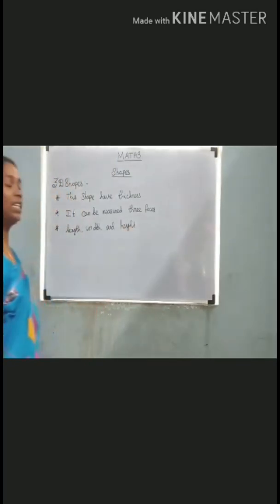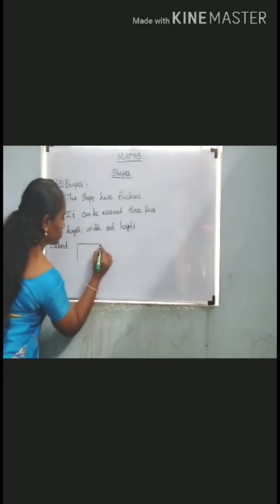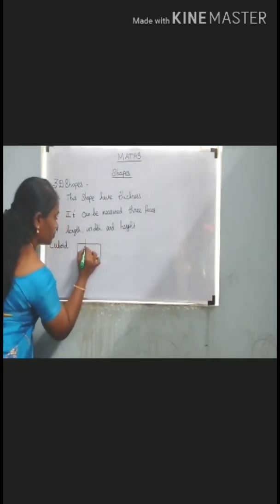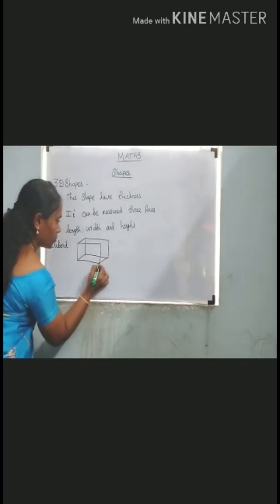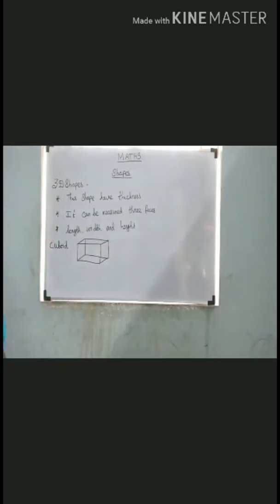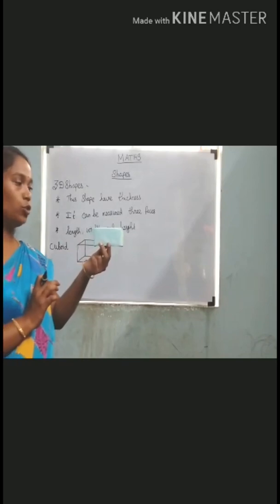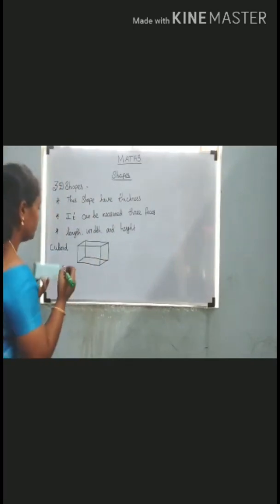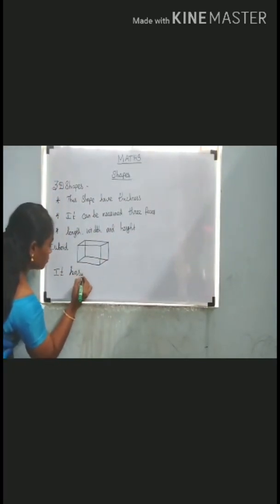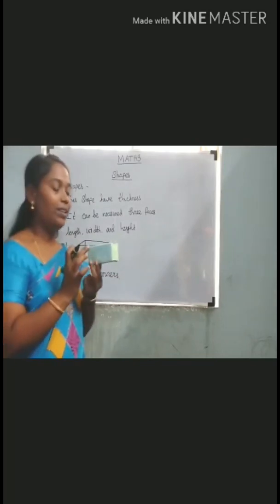What are the 3D shapes? Listen. Cuboid. This is a cuboid shape. It has 8 corners and 12 edges.